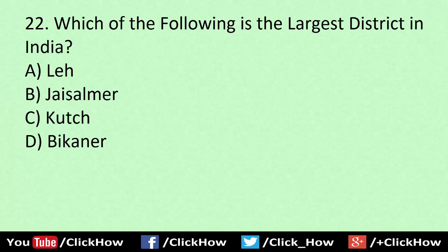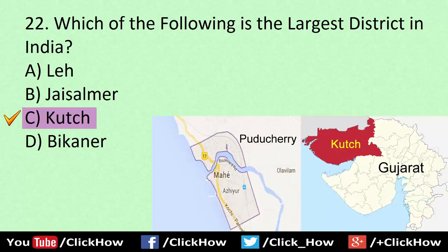Which of the following is the largest district in India? Answer is C, Kutch. Another related GK question: the smallest district in India is Mahe. Kutch is located in Gujarat and Mahe is located in Puducherry.